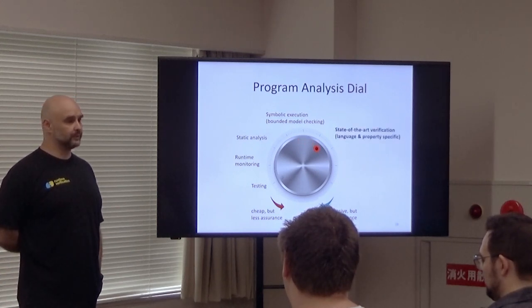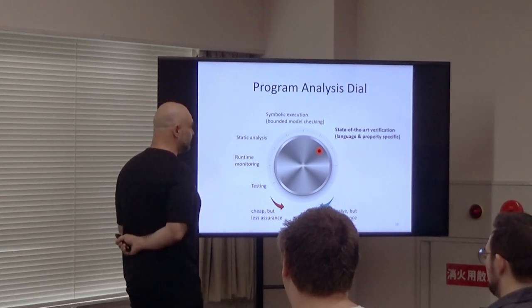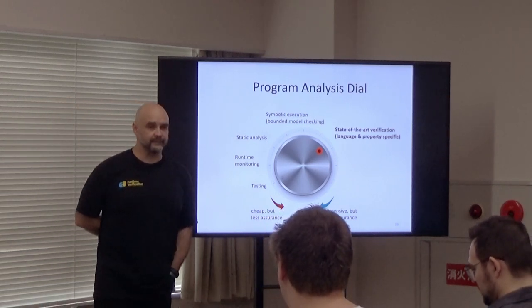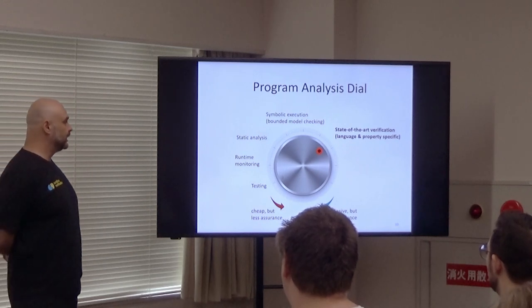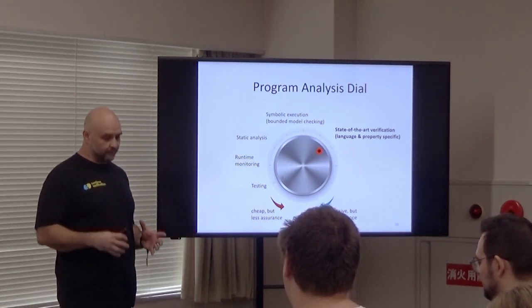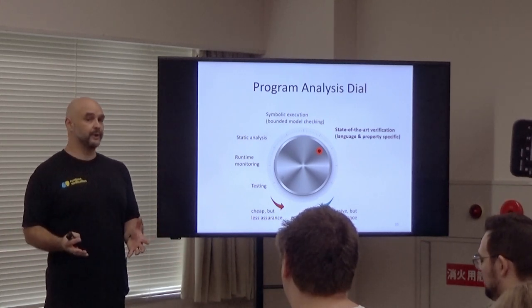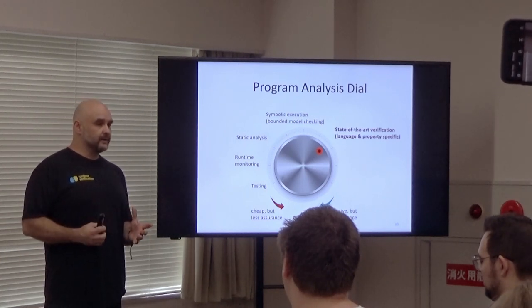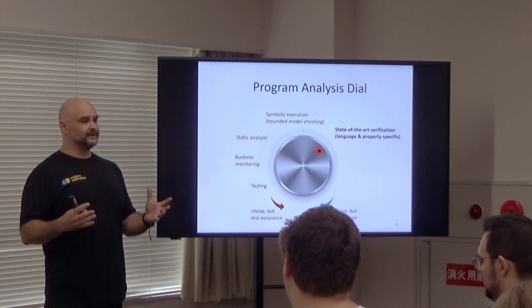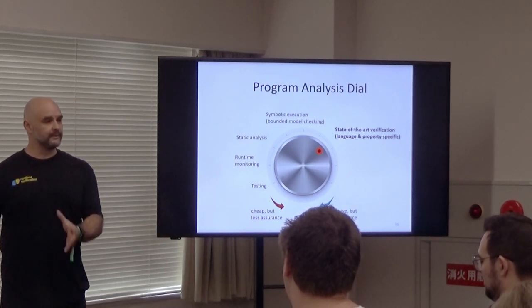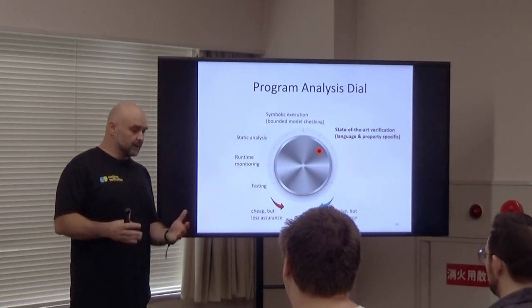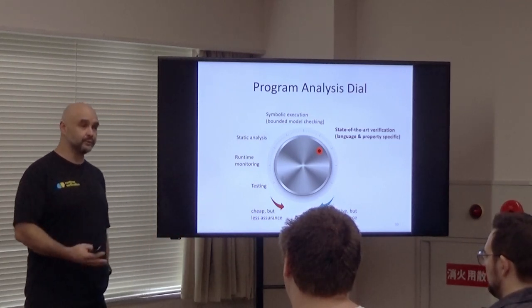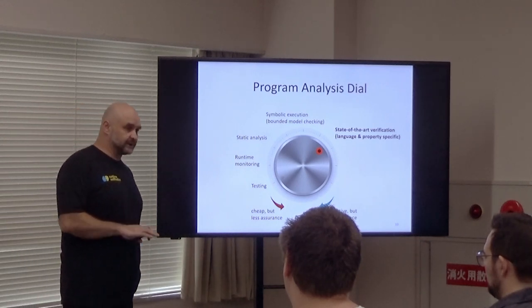If you want to be utterly sure that you don't miss any behavior, then you have to go into formal verification — what I call state-of-the-art verification. This is where a programming language provides a specification language on top of your existing language, allowing you to specify properties of interest. Your formal verification tool then analyzes all behaviors of the program against those properties, and with some help — additional hints or lemmas — you may be able to prove the properties correct.